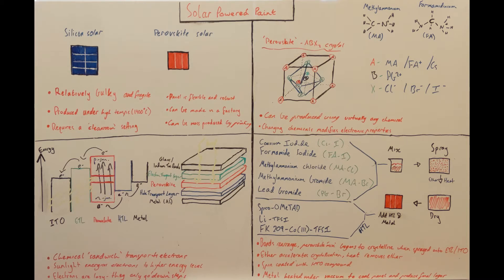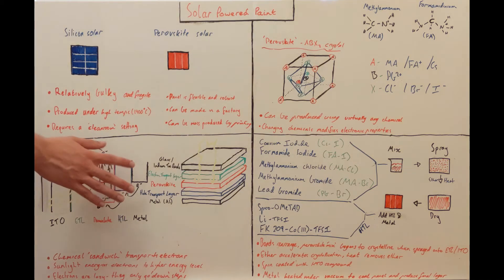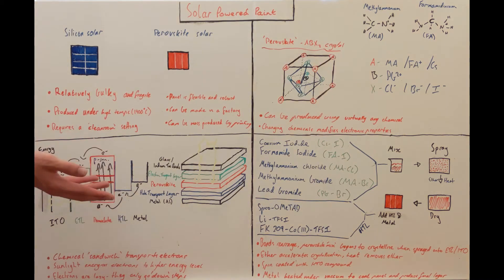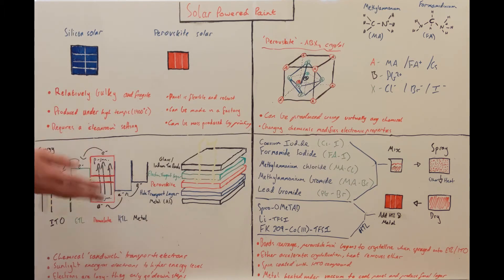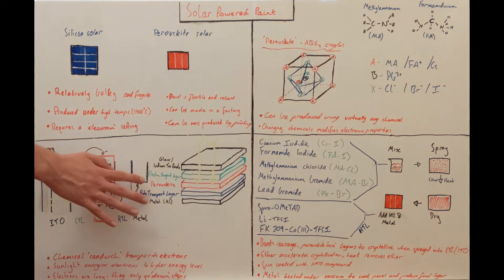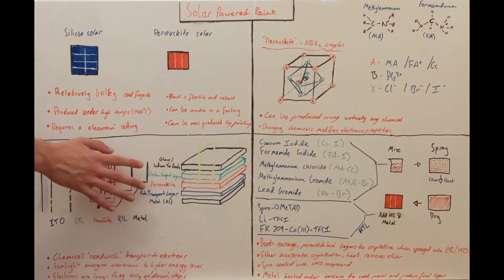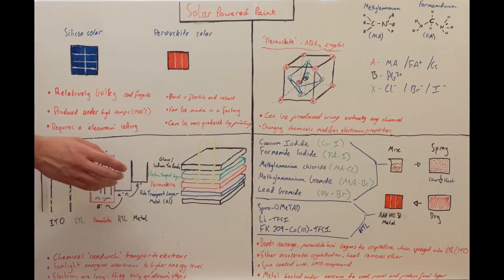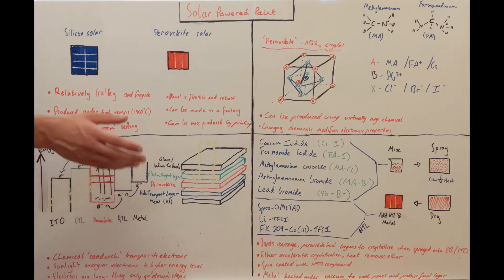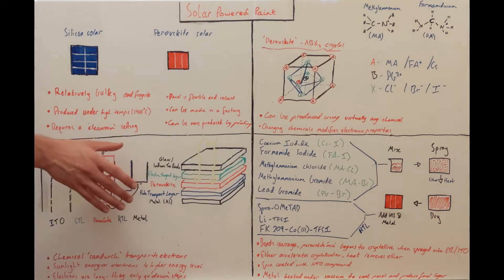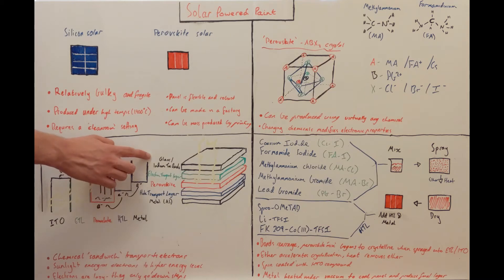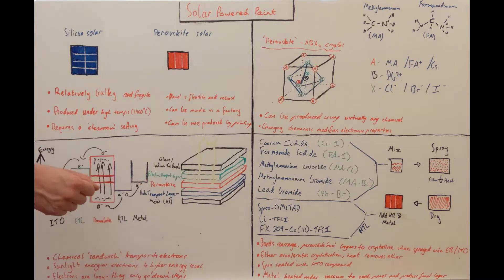In order for perovskite to generate electricity, we have to sandwich it between other materials. We start with the perovskite layer in the middle and sandwich it between an electron transport layer and a hole transport layer. We then sandwich all those materials between two more layers: the glass and indium tin oxide layer, and a metal aluminium layer.